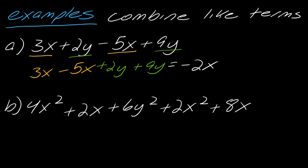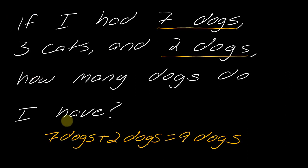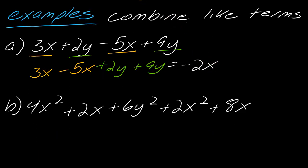So 3 minus 5 is -2, and then it's just -2x. It's not 2x². The x's just stay the same. It's just like what we were talking about with the dogs. If you have 7 dogs and 2 dogs, it doesn't become 9 dogs squared. It's just dogs. So now instead of having dogs it's x's and y's. And then 2y plus 9y, so just take 2 plus 9, that's 11, and then you just tack on the y at the end.